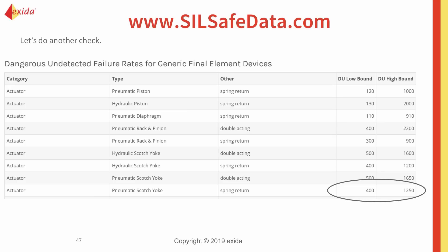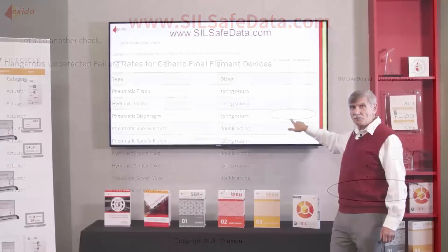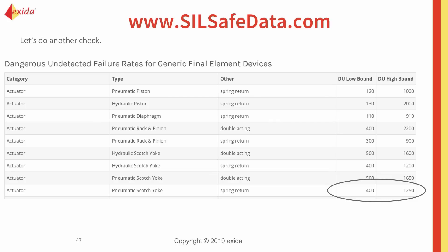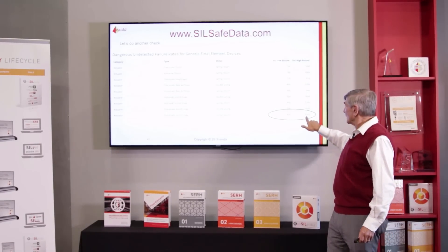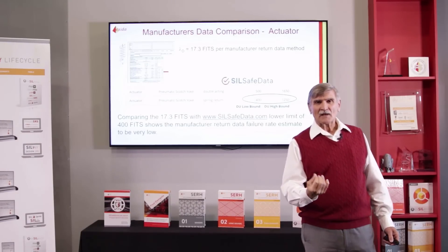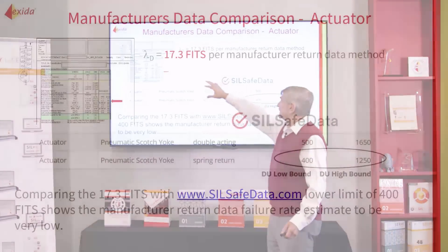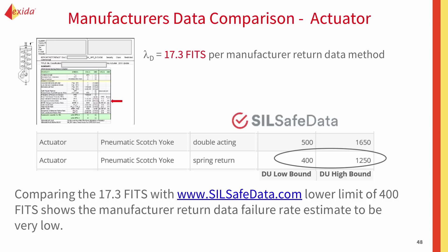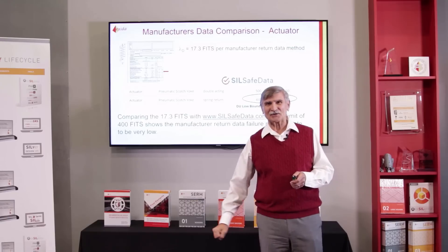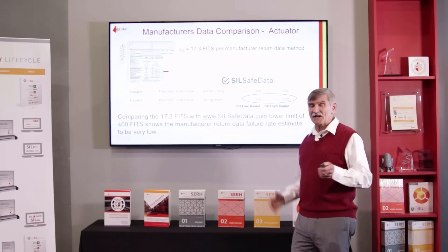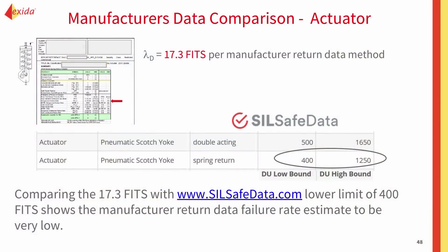Let's focus on a pneumatic scotch yoke spring return. Even with unreasonable limits of plus or minus three sigma, the dangerous undetected failure rate should be a minimum of 400 up to somewhere around 1250. So I get a piece of data — I use SILSAFE data to do a comparison, I pull out the data sheet and it says 17.3 fits. The low limit is 400. This is more than an order of magnitude too low. Quite frankly, this is exactly the sort of thing you get when manufacturer's warranty data is used with optimistic assumptions on the part of the manufacturer. Now you can use SILSAFE data to reject this particular data.